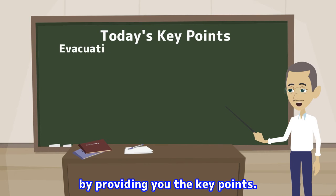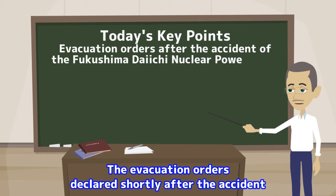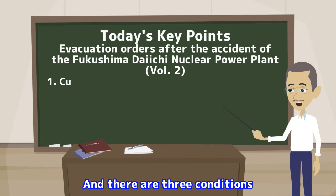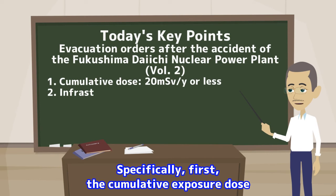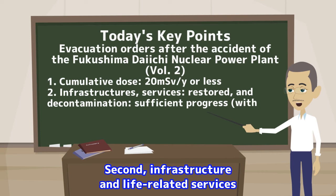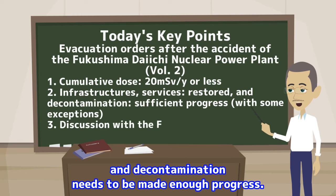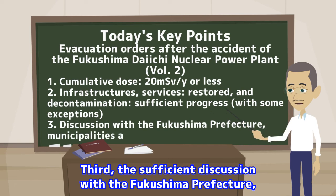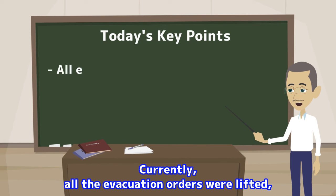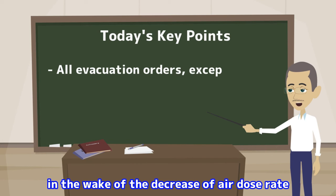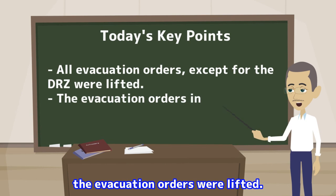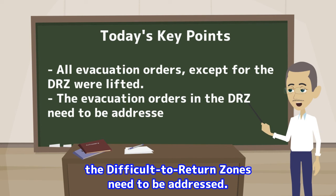Let me wrap up today's lecture by providing you the key points. The evacuation orders declared shortly after the accident were sequentially recategorized into three new evacuation areas based on the exposure dose. There are three conditions for the lift of evacuation orders: first, the cumulative exposure dose needs to become for sure 20 mSv or less; second, infrastructure and life-related services need to be almost restored and decontamination needs to have made enough progress; third, sufficient discussion with the Fukushima Prefecture, relevant municipalities and residents. Currently, all evacuation orders were lifted except for the difficult-to-return zones, in the wake of the decrease of air dose rate and other achievements. Even in part of the difficult-to-return zones, evacuation orders were lifted. The evacuation orders in the rest of the difficult-to-return zones still need to be addressed.